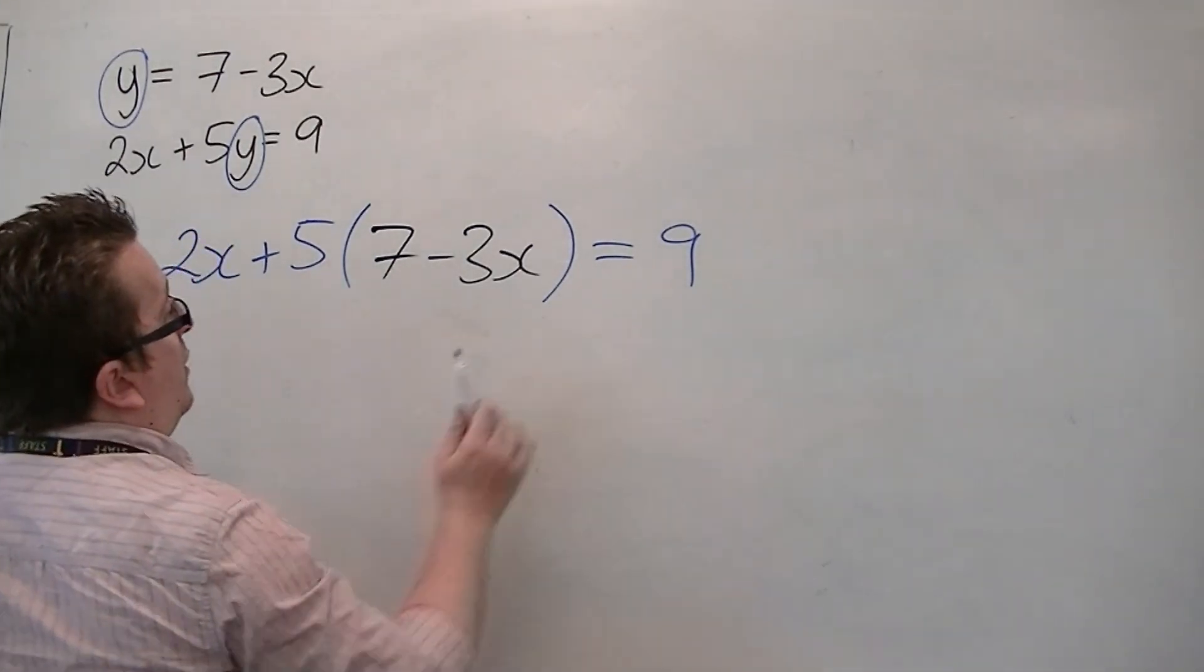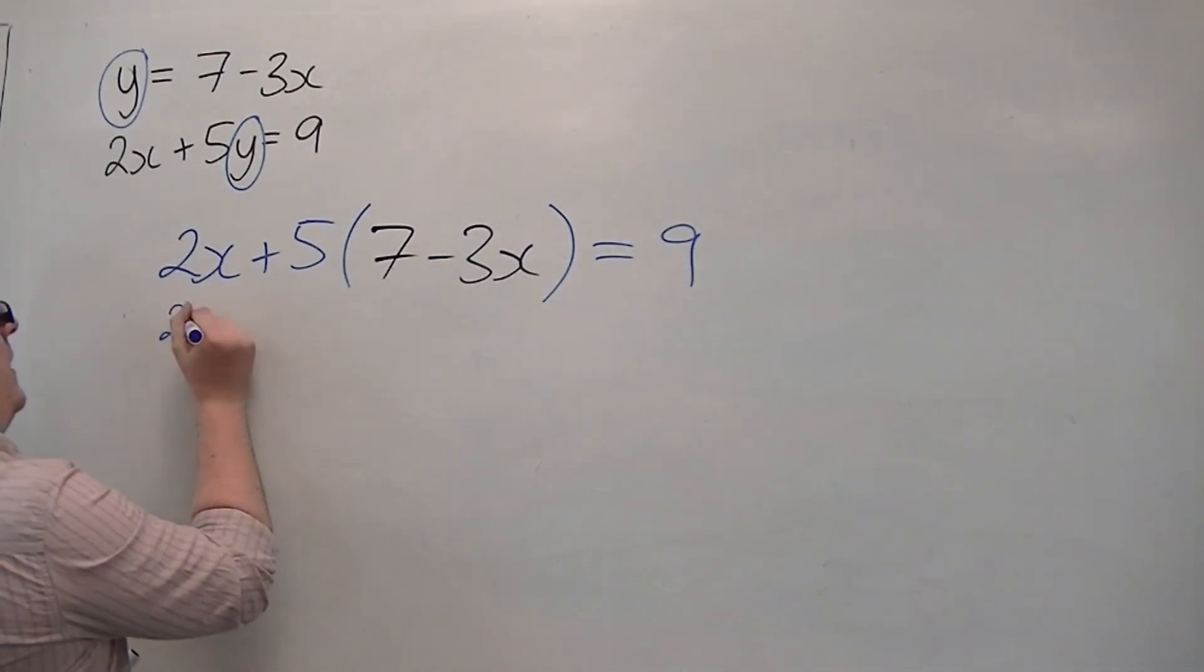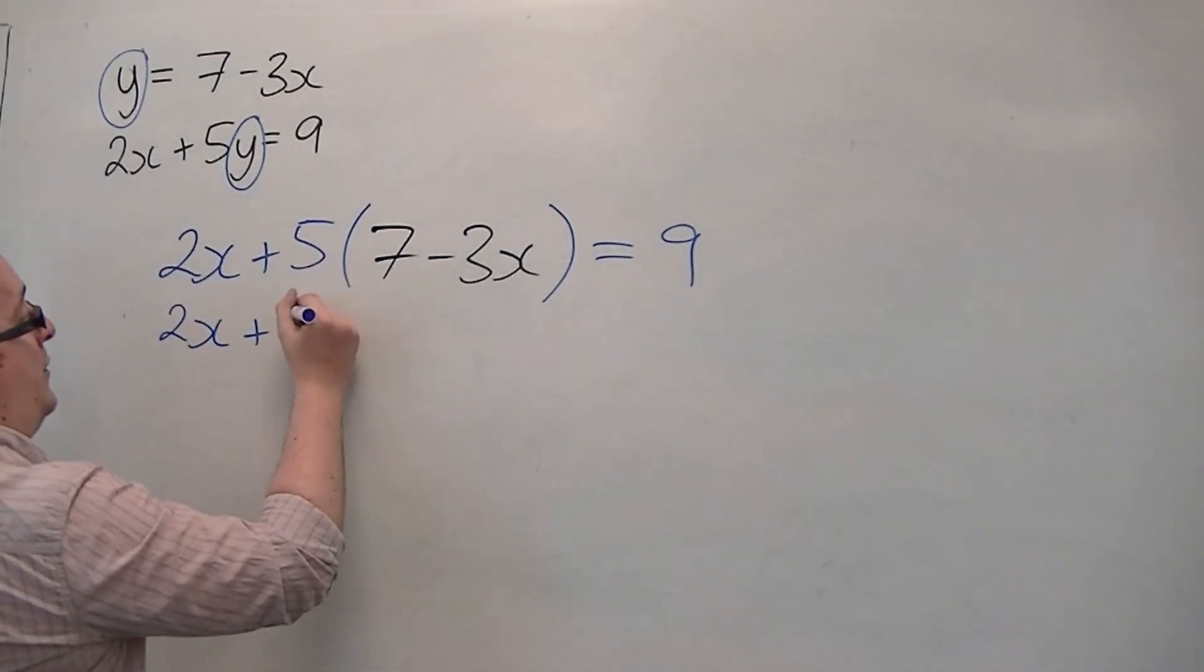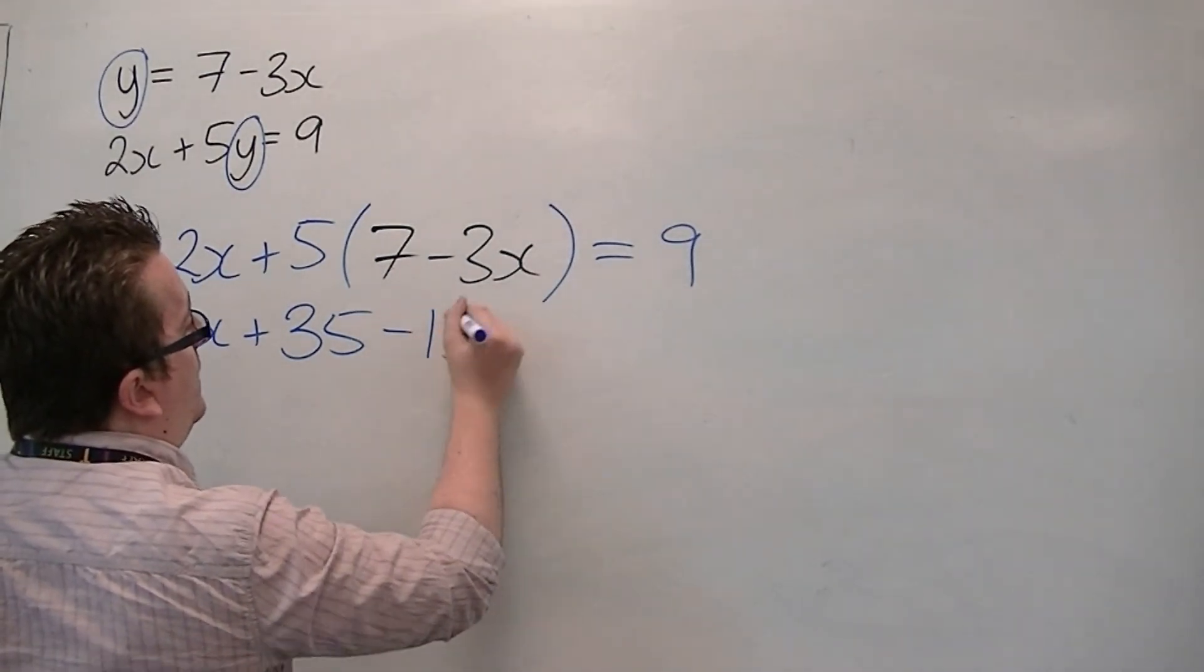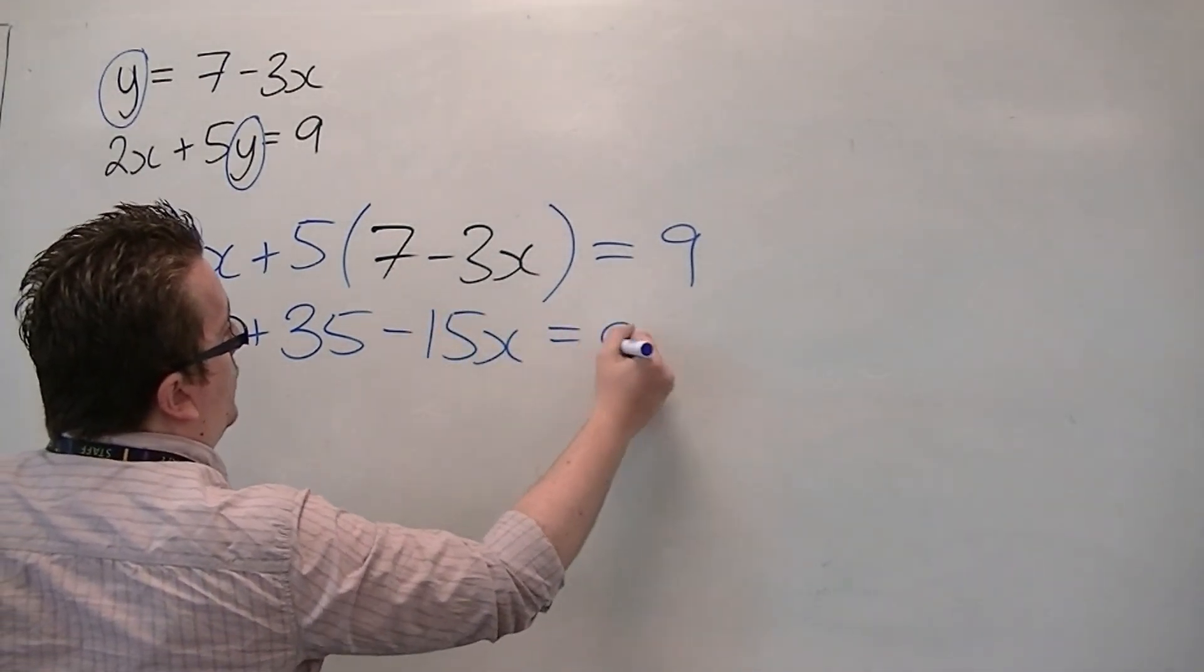So we multiply this out, we get 2x plus 5 lots of 7 is 35, 5 lots of minus 3x is minus 15x, and we've got that equal to 9.